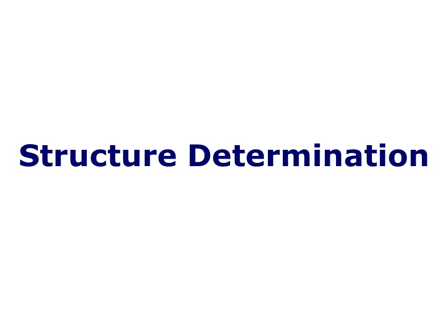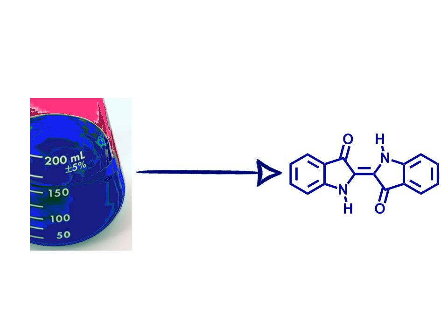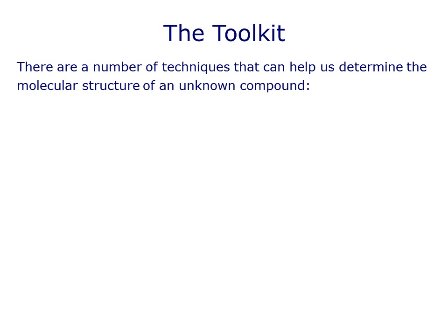So you've done a reaction and made a new, interestingly coloured compound, or you've extracted a powerful new medicine from an interesting natural source. How do you prove it's what you think it is? How do you find out what it is if you have no idea? Your first step is to isolate and purify the compound, using different solvents to extract, separate, perhaps changing the pH in an acid-base separation, then using chromatography, distillation or recrystallisation to give you a pure compound. Then comes the process of structural elucidation, which takes advantage of a number of different powerful techniques.